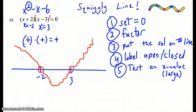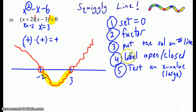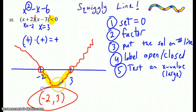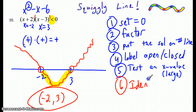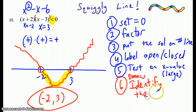The question asks where these values are less than 0 — negative, in other words. You can see on the graph all these values are less than 0 in the interval between negative 2 and 3, not including 3, not including negative 2. The last step is to identify the solution interval — draw the squiggly line and identify the solution interval.